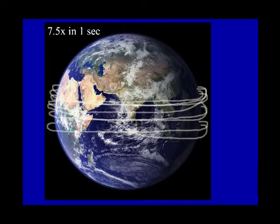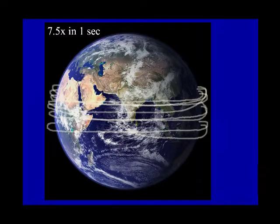Remember, though, distances in space are vast. You could go around the Earth's equator seven and a half times in one second, but even light is slow when it comes to interstellar distances.